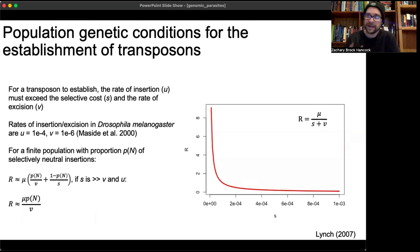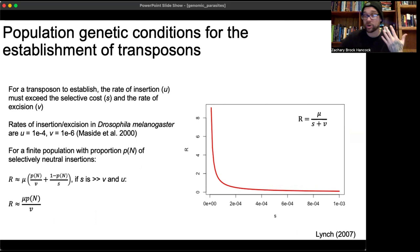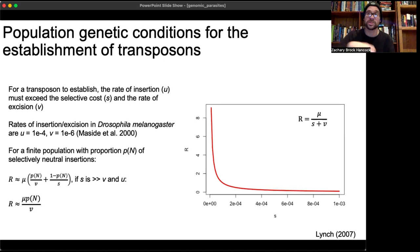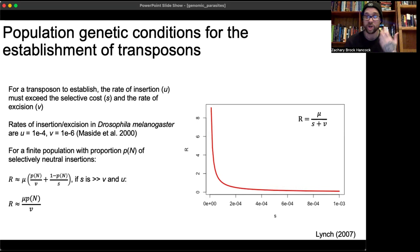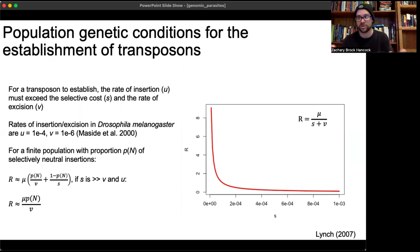Now let's talk about the population genetics of transposable elements. For a transposon to establish, the rate of insertion must exceed both the selective cost and the rate of excision. Selection reflects how costly the insertion event is; excision is the mutational process of deleting the sequence. This net replacement rate R must be one or greater — if one or greater, you can have persistence and proliferation; if less than one, the transposon will eventually disappear from the population.